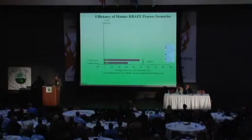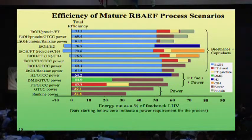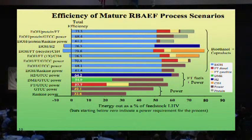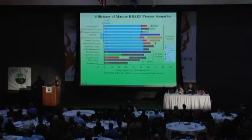We looked at about 24 different advanced technology scenarios, of which only some are represented here. This is looking at the percentage of the feedstock energy heating value that is yielded as products. The first two options are for dedicated power. Then we have Fischer-Tropsch fuels combined with power. And then we have a variety of options producing ethanol — it could as well be butanol and would not be very different — combined with a number of byproducts: Fischer-Tropsch diesel, Fischer-Tropsch gasoline, hydrogen, protein, and power.